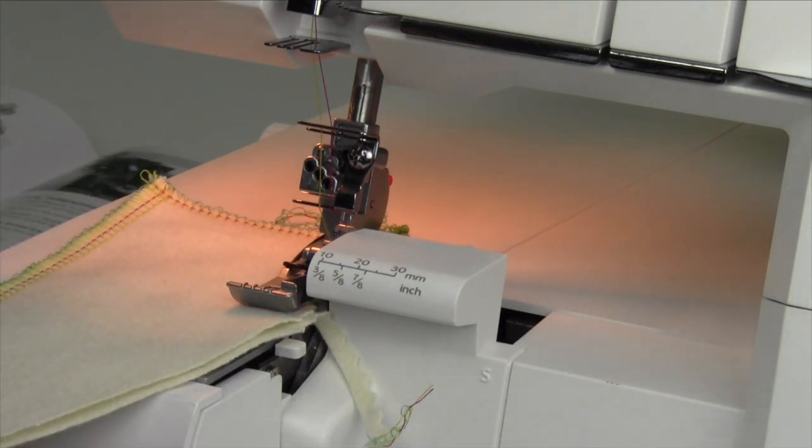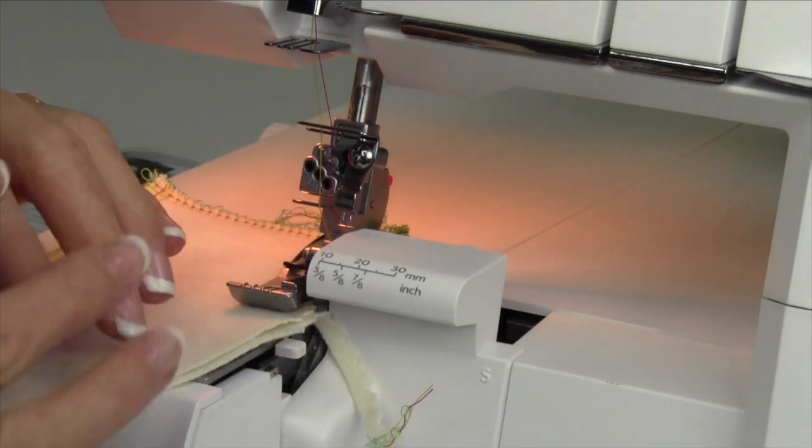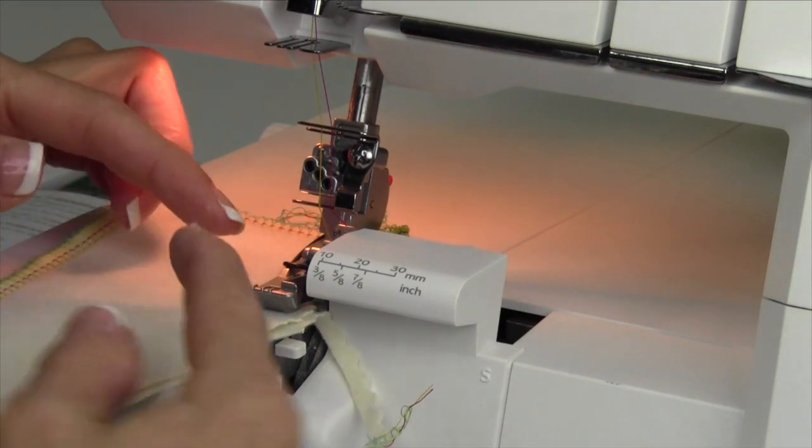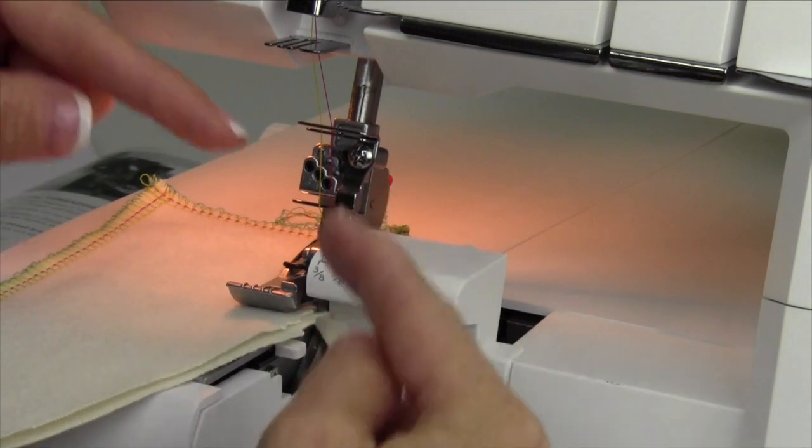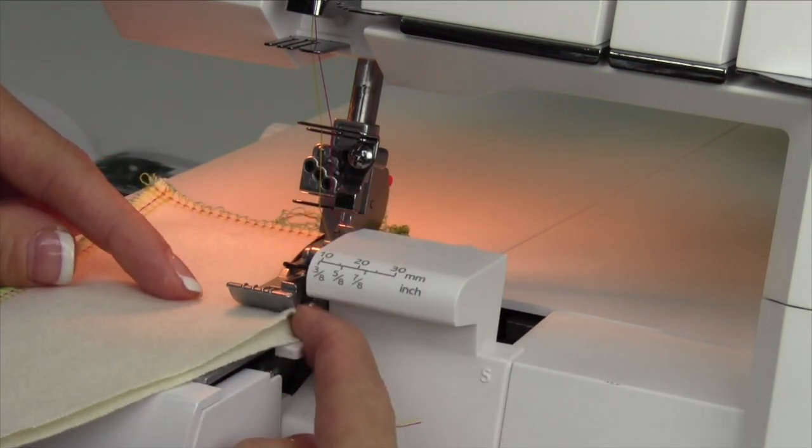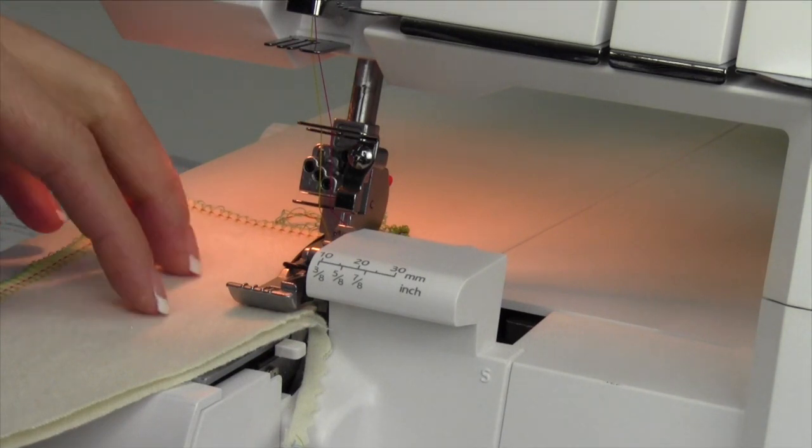You need one eye looking one place and one eye looking a second place, so you don't end up losing the stitch off the curve. Because there's such a distance between where the knife is and where the needle is, you need to watch each of them. One eye is going to be on the front, one eye back here, and the more you practice, the easier this is.